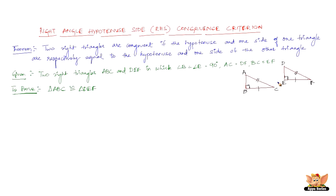We need to do a small construction here. The construction is to produce DE so that EG equals AB, where G is the new point, and then we join GF. Now the proof goes like this.